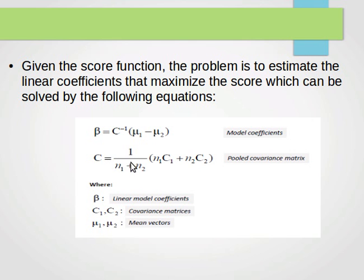1 over n1 plus n2. n1 is the number of instances in the first subset for the yes class. n2 is the number of instances or observations in the second class, the second subset, which is for the no class. Times n1, c1. c1 is the covariance matrix for the first subset. c2 is the covariance matrix for the second subset. As you can see, 1 over n1 plus n2 times n1, c1 plus n2, c2. That's how we find c, the pooled covariance matrix.